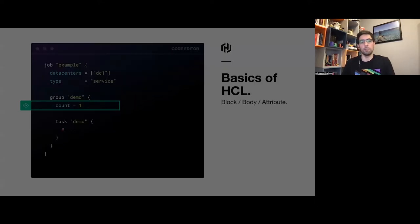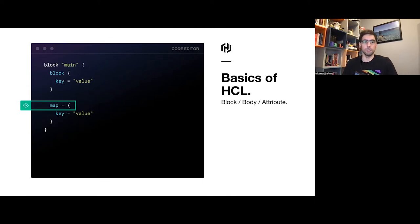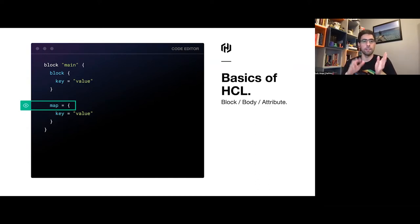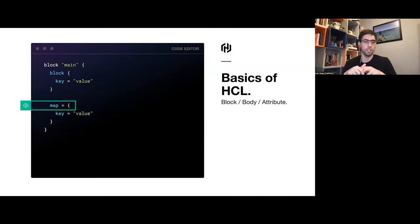One data type that is fairly common to get confused is the map data type, because it looks like a block since it uses the same curly brace syntax. But notice that a map is going to have that identifier-equals-expression format — it will have that equals sign — whereas a block without a label will not have that equals sign.